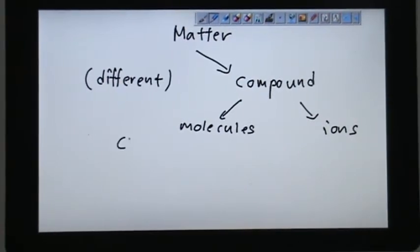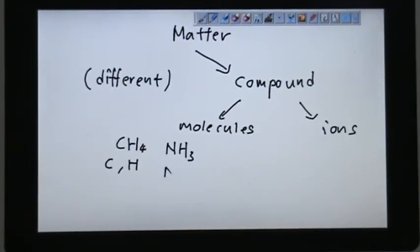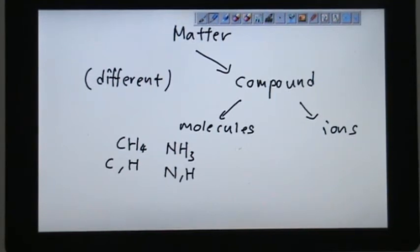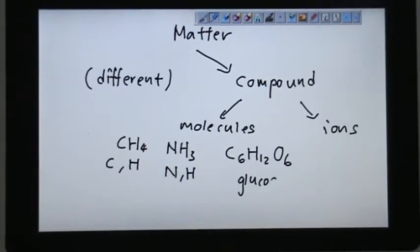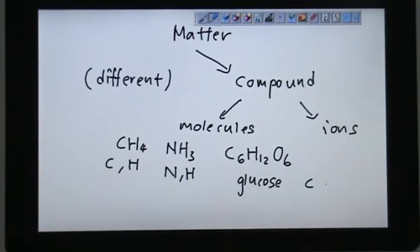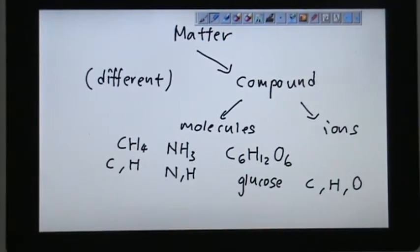The keyword in compound is they consist of different types. Different type of element. Example, CH4. It consists of C and H, carbon and hydrogen. NH3 consists of nitrogen and hydrogen. C6H12O6. This is glucose, sugar. And it consists of carbon, hydrogen and oxygen.